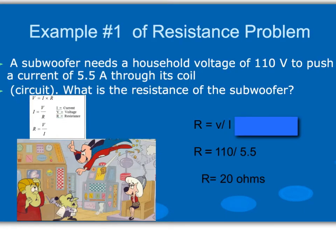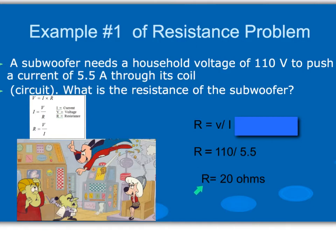In this problem, a subwoofer needs a household voltage of 110 volts to push a current of 5.5 amps through its coil. What is the resistance of the subwoofer? Because we're solving for resistance, we will use Ohm's law in the form: resistance equals volts divided by current. We are given voltage as 110 and current as 5.5. Doing the math, we have 20 ohms of resistance.